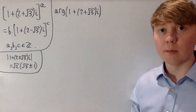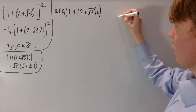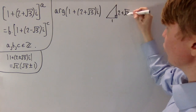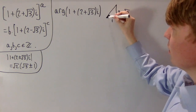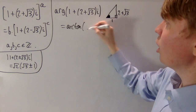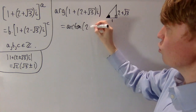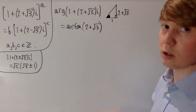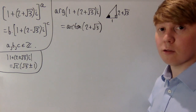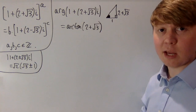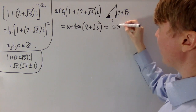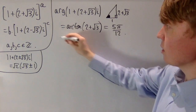For the argument of our first complex number, we draw a quick picture: the real part is 1 and the imaginary part is 2 + √3. Since both are positive, the argument is simply arctan((2 + √3)/1) = arctan(2 + √3). This is not the most well-known exact value, but 2 + √3 = tan(75°) = tan(5π/12 radians), so the argument is 5π/12.